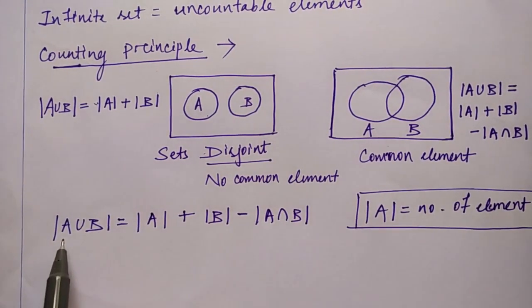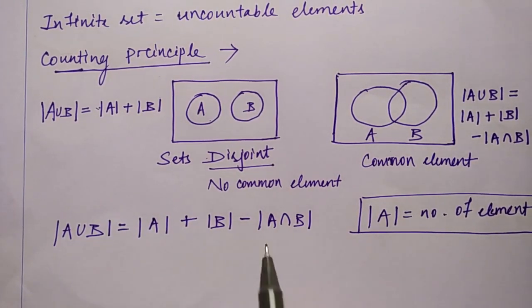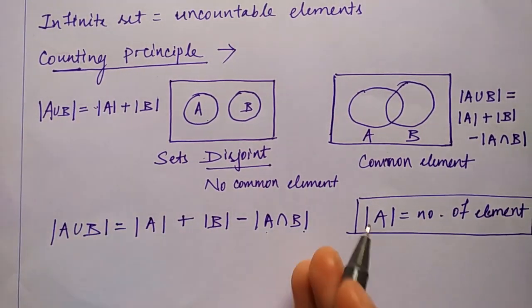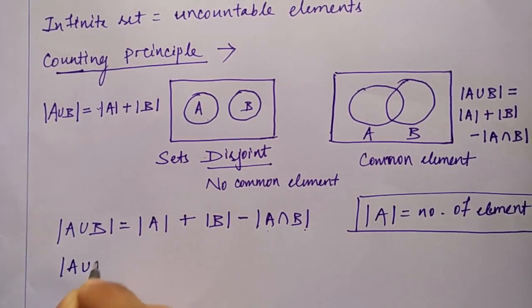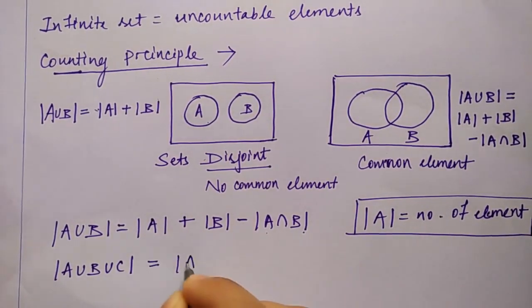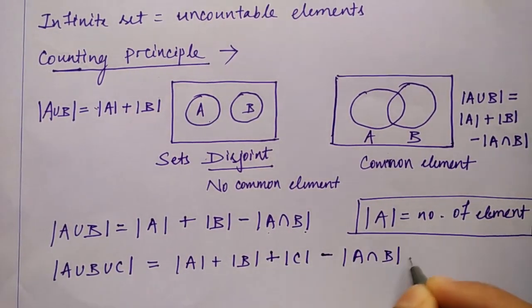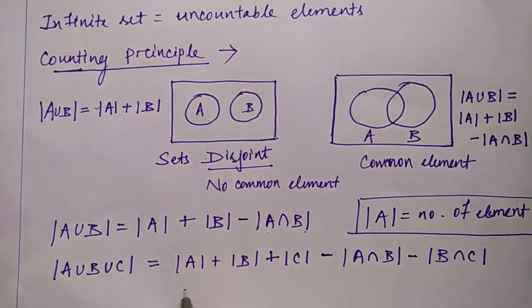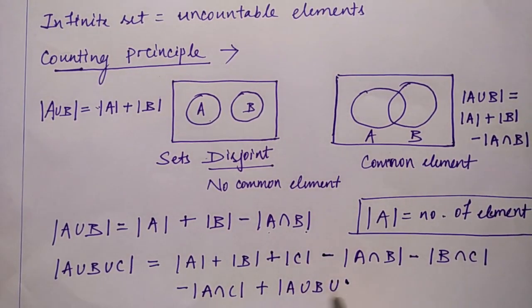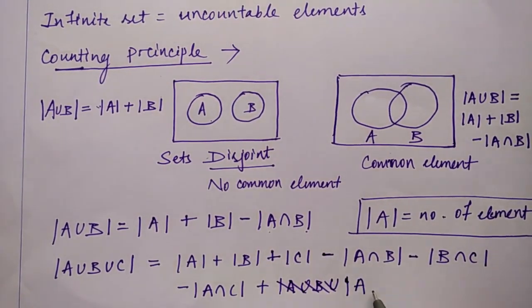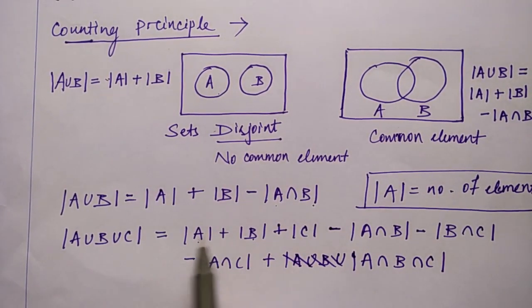If you want to find the intersection value, you can rearrange the formula. This was for two sets. If you have three sets, |A∪B∪C| = |A| + |B| + |C| - |A∩B| - |B∩C| - |A∩C| + |A∩B∩C|.